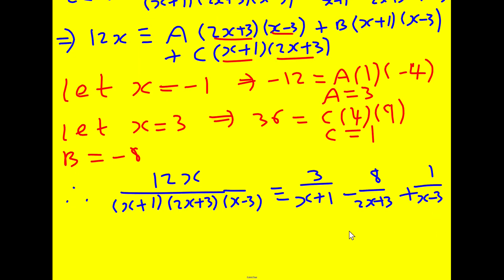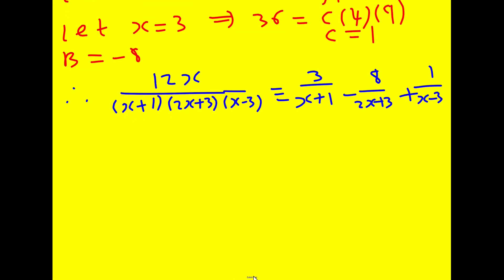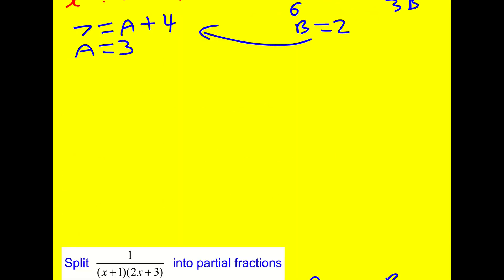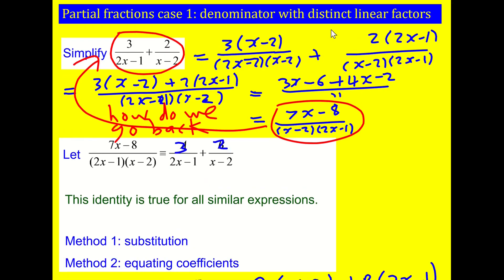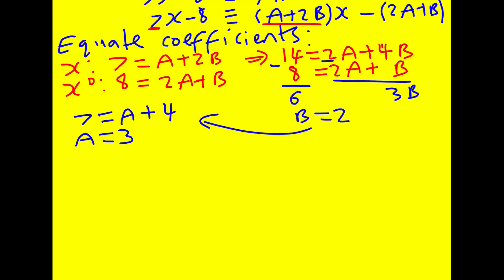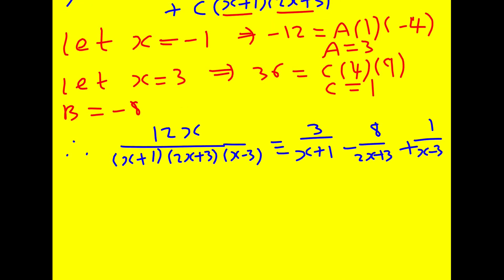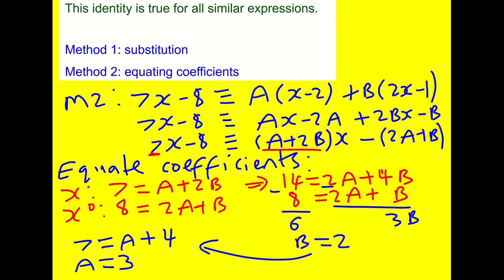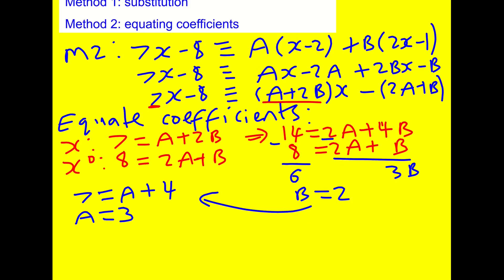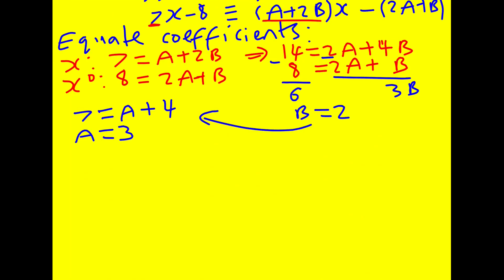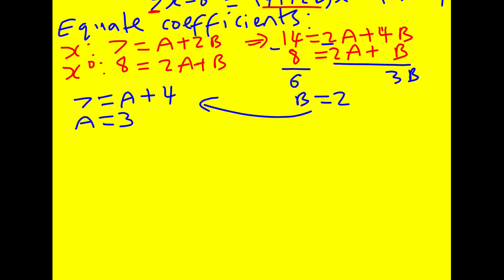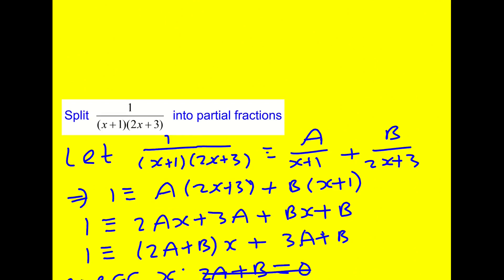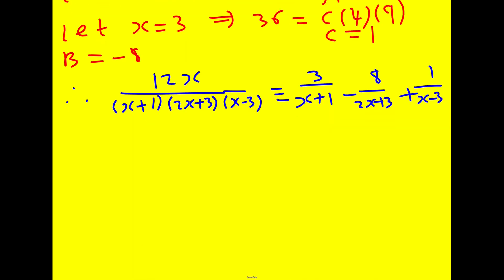Quite a lot of talking in this lesson, but we've looked at partial fractions case one — distinct linear factors — covering both two and three distinct linear factors. We solved using substitution, which is a really quick and clean method, and also equating coefficients, which is worth learning. That's us done for this lesson.